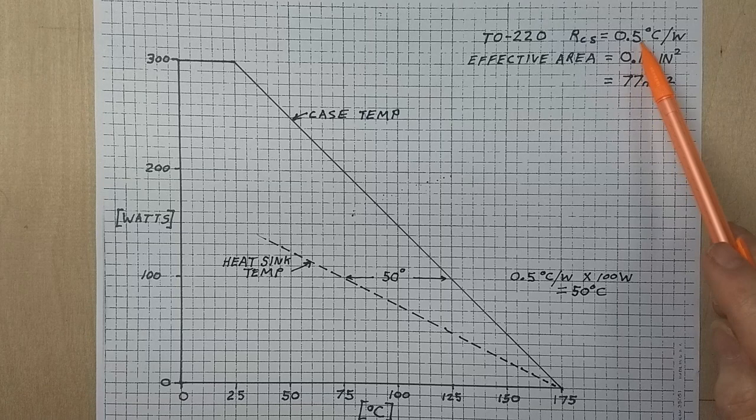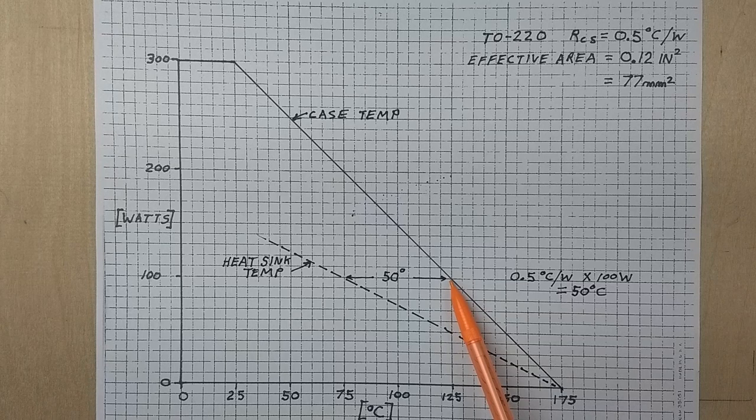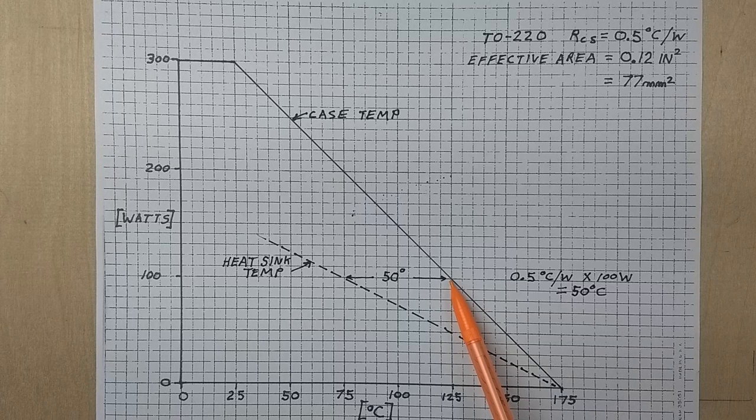Now with a thermal resistance from the case to the sink of 0.5 degrees C per watt, when we're dissipating 100 watts, a heat sink has to be 50 degrees cooler than the allowable case temperature. So that's a very important factor.